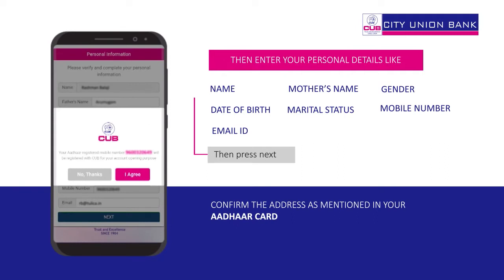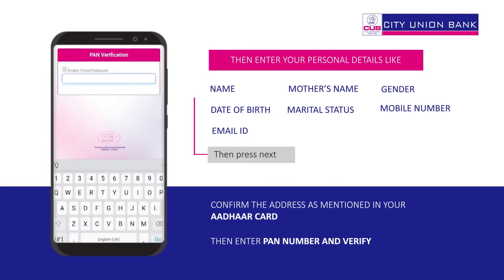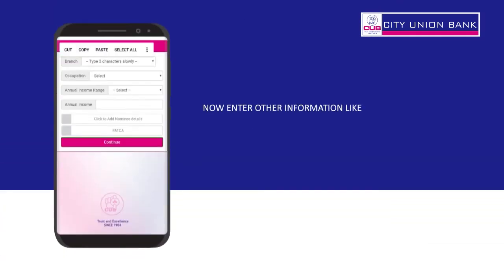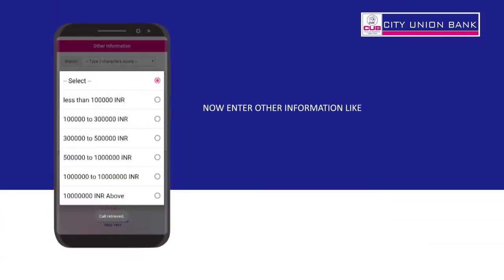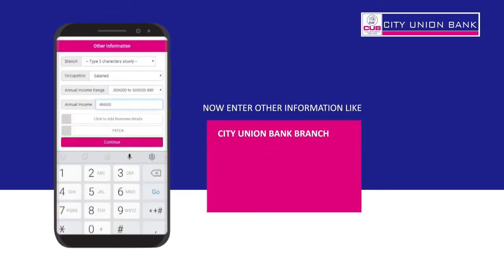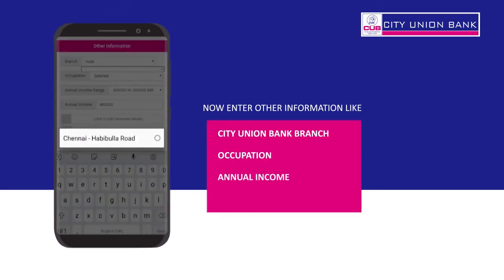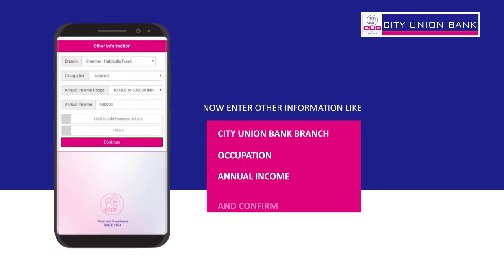Confirm the address as mentioned in your Aadhaar card. Then enter your PAN number and verify. Now enter other information like CUB Brand, Occupation, and Annual Income, and confirm.